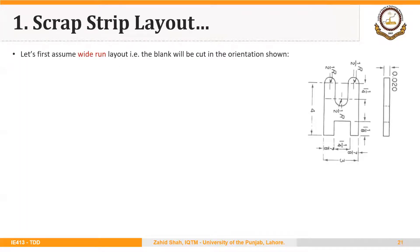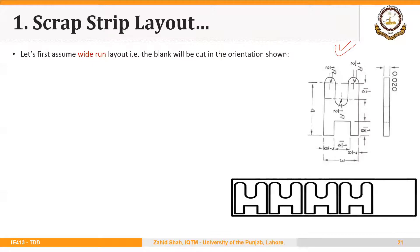First, let's assume wide run layout. The blank will be cut in the orientation shown — we will place the blank in this orientation. So this is the first blank that will be cut, then the second blank, third, fourth, and so on. This is the orientation of the blank when it will be cut — that is the wide run layout.